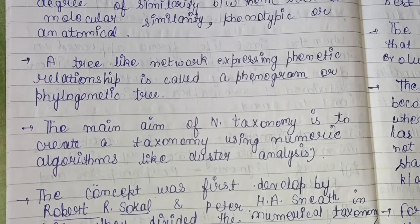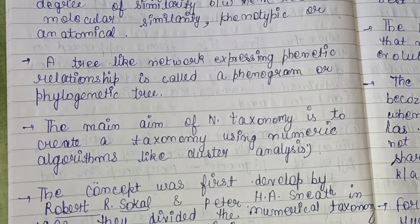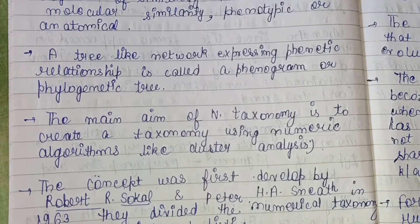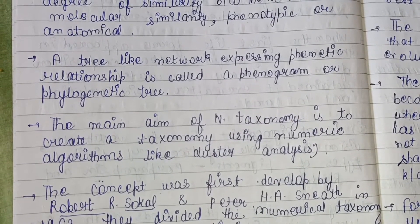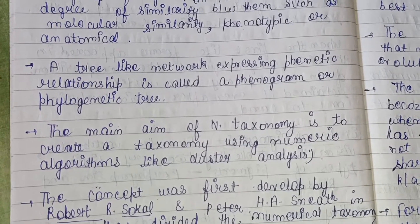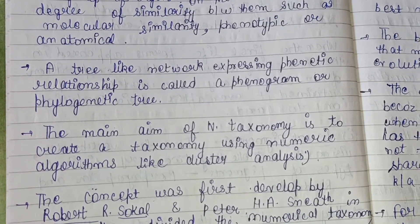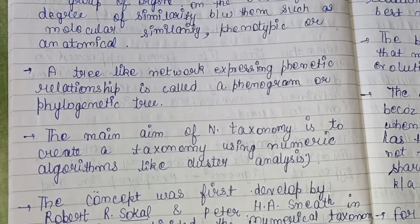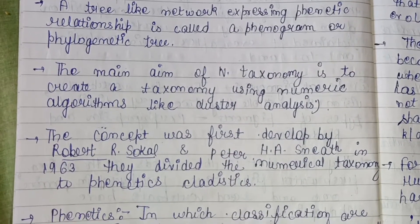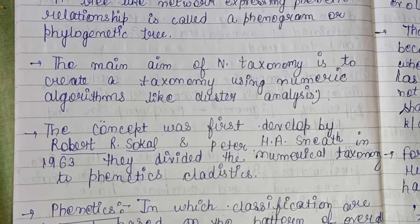The main aim of numerical taxonomy is to create a taxonomy using numerical algorithms like cluster analysis. Cluster analysis is the task of grouping a set of objects such that objects in the same group — called a cluster — are more similar to each other than to those in other clusters. The concept was first developed by Robert R. Sokal and Peter H. A. Sneath in 1963.